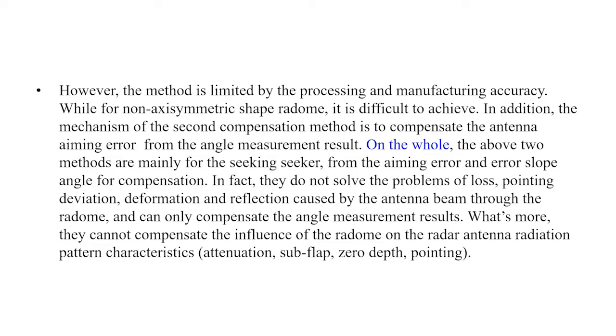The mechanism of the second compensation method is to compensate the antenna aiming error from the angle measurement result. The above two methods are mainly for seekers, compensating the error and error slope angle. In fact, they don't solve the problem of loss, pointing deviation, deformation, and reflection caused by the antenna beam through the radome. They can only compensate the angle measurement results, but cannot compensate the influence of the radome on radar antenna radiation pattern characteristics such as attenuation, sub-flap, and zero-depth pointing, and so on.